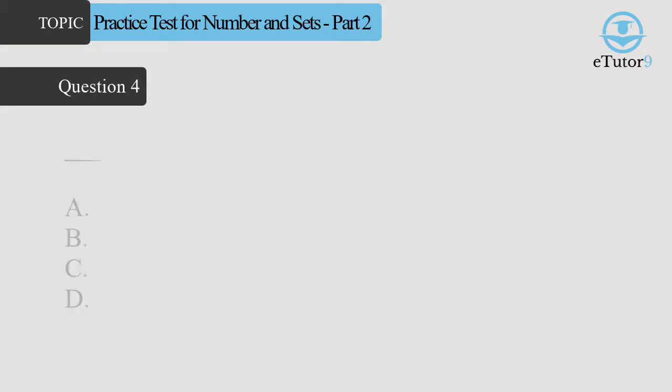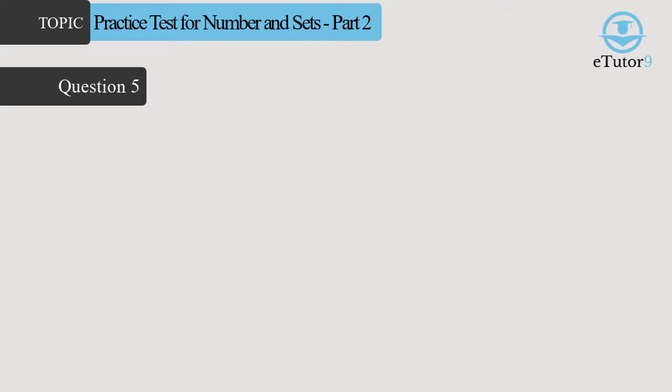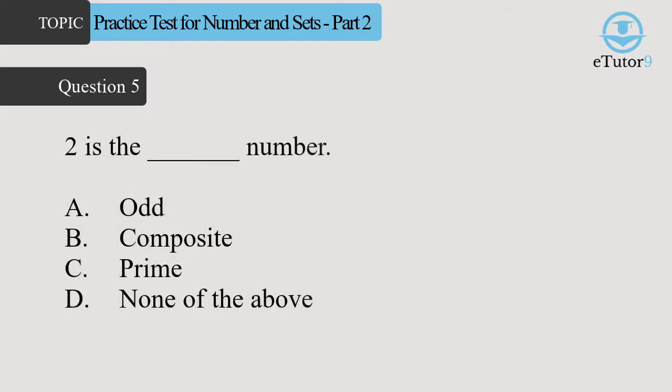Question 4. Blank is neither prime nor composite. Answer is D. 1. Question 5. Two is the blank number. Answer is C. Prime.